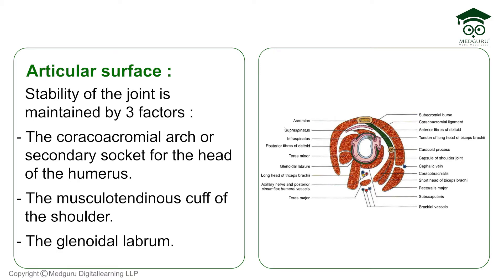Its stability is maintained by three factors. First is the coracoacromial arch, which basically makes a second socket for the humerus where it can rest. Second is the musculotendinous cuff of the shoulder — four muscles that make a musculotendinous cuff providing added protection. Third is the glenoid labrum — labrum means lip — a fibrocartilaginous lip that deepens the glenoid cavity.